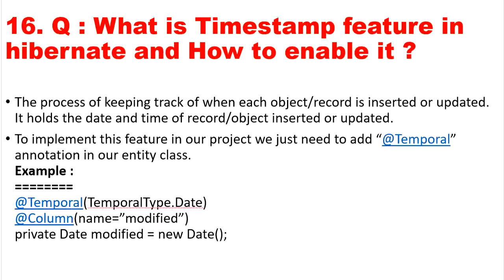The next question is: what is the timestamp feature in Hibernate and how to enable it? The process of keeping track of when each object or record is inserted or updated — holding the date and time — is the timestamp feature. To enable it, we use the @Temporal annotation with either TemporalType.DATE or TemporalType.TIMESTAMP. We need to create an extra column in the database and define a property in the entity class: private Date modified.